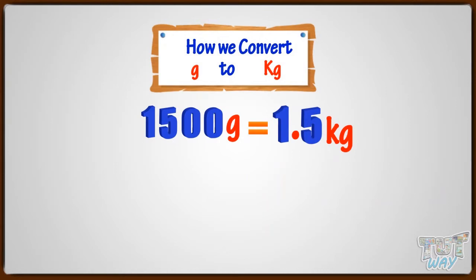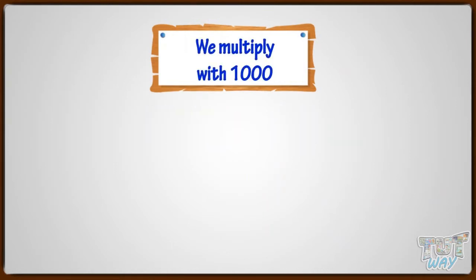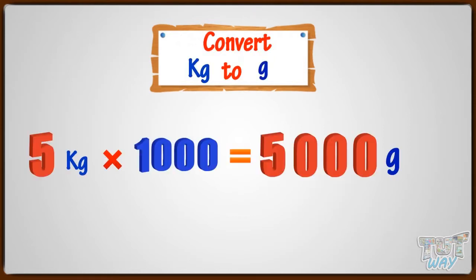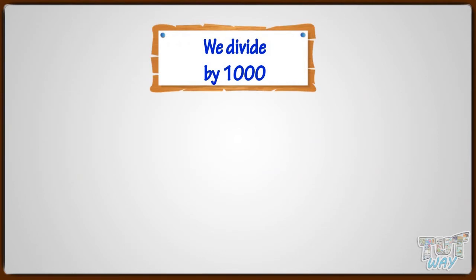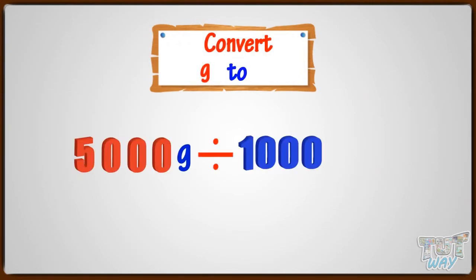So kids, we multiply with 1000 if we want to convert kilograms to grams. And we divide by 1000 if we want to convert grams to kilograms.